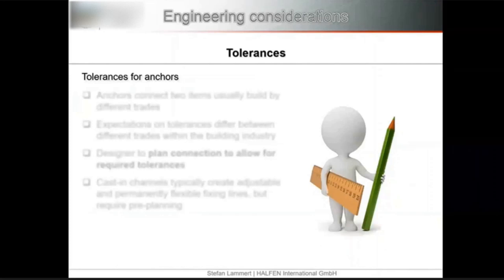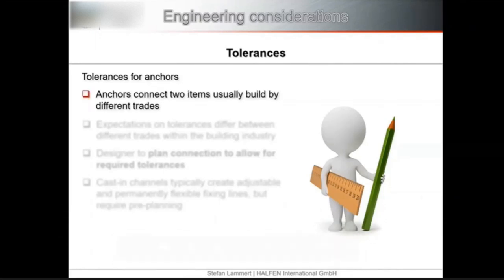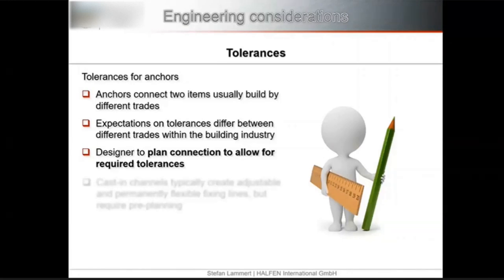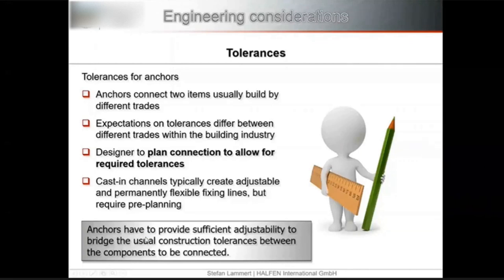Tolerances are another important consideration when deciding on the right fastener. Anchors usually connect two items built by different trades — for example, when a facade is fixed to a concrete floor. The tolerances expected by the concrete contractor and the facade contractor are completely different. The designer must understand the tolerances expected from each trade and incorporate these into the design.